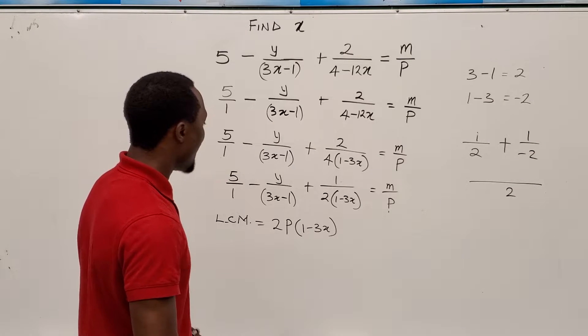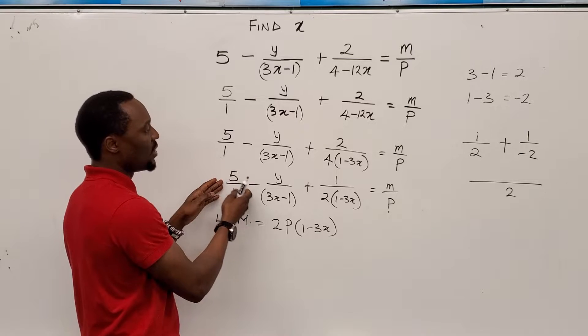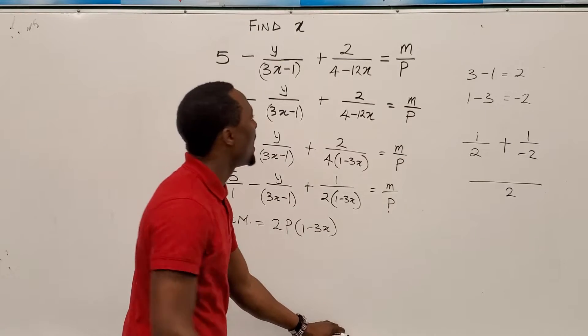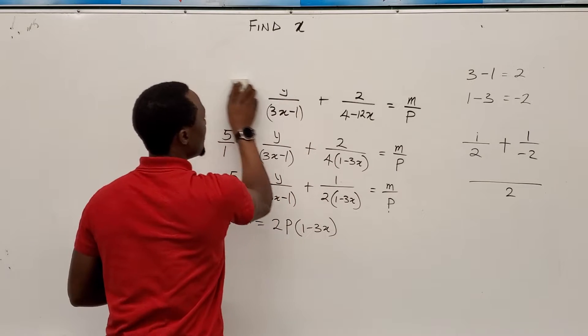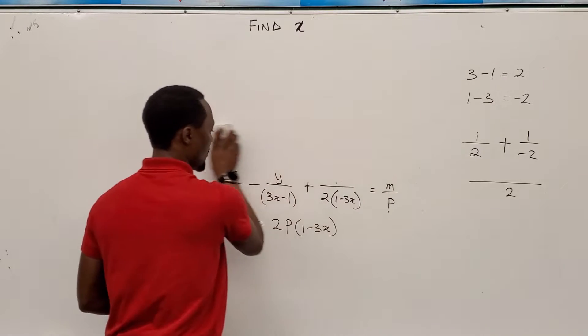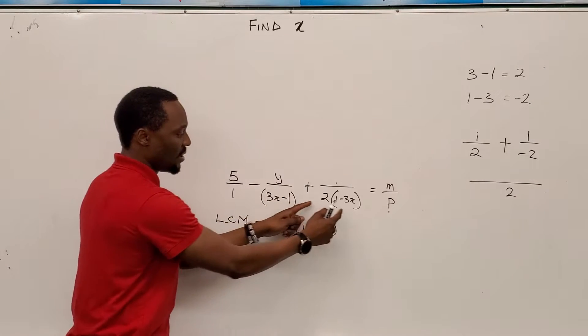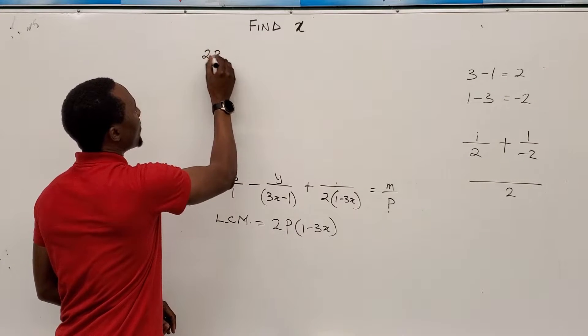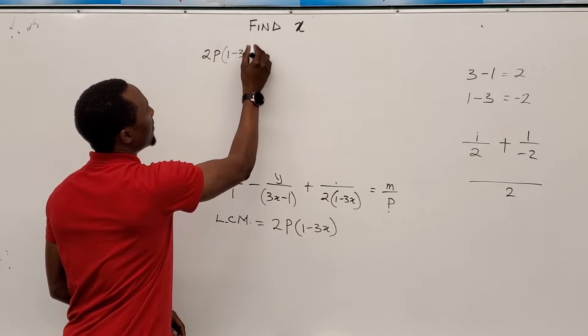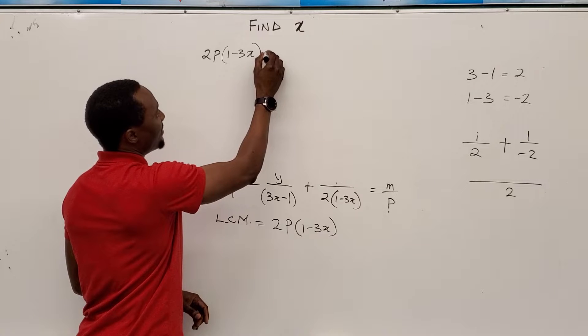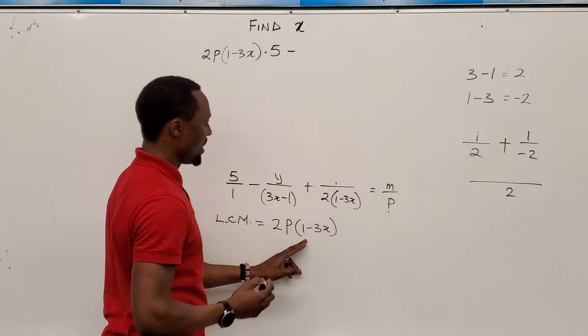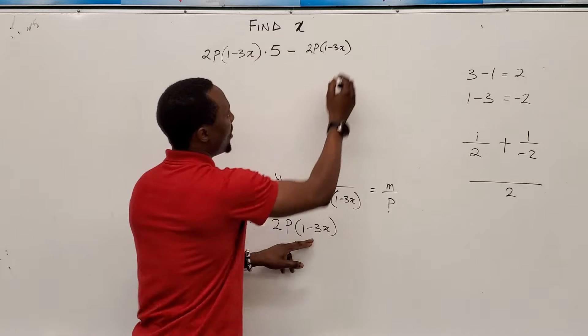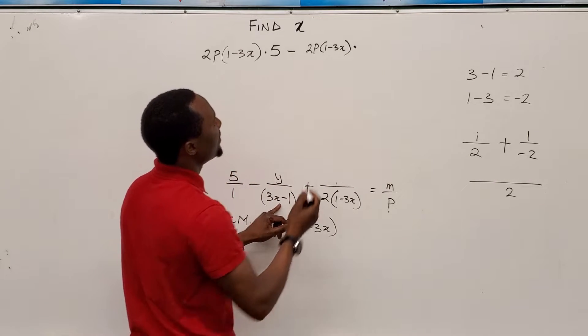I'm going to erase the top sum of this and try and fix it. So let's say that we found the LCM and we have this equation. We just want to multiply each term by the least common multiple. Let's do that. So what I'm going to do is multiply each of these terms by the least common multiple, which will be 2P into 1 minus 3X multiplied by 5 minus. I repeat the same thing, 2P into 1 minus 3X multiplied by y over 3X minus 1.